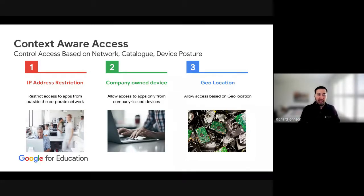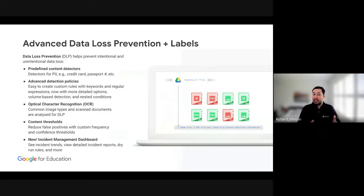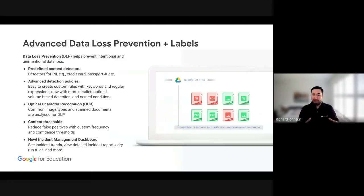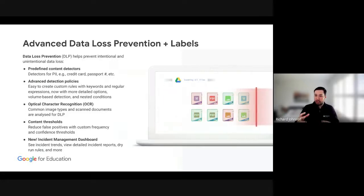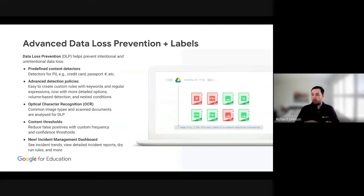These settings are available to you in the Admin Console under your security settings. Data Loss Prevention — there is a standard DLP function as part of Workspace, but Workspace Plus takes it further by combining it with things such as labels and Google Chat. DLP scans across your system and looks for keywords or regular expressions — things like credit card numbers, Medicare numbers, or cyberbullying words — to detect and create conditions for different documents, emails, or chats.